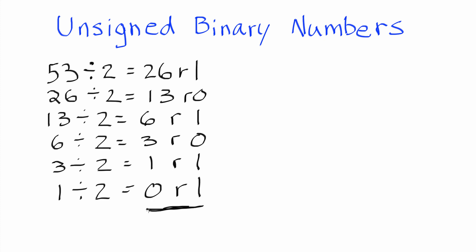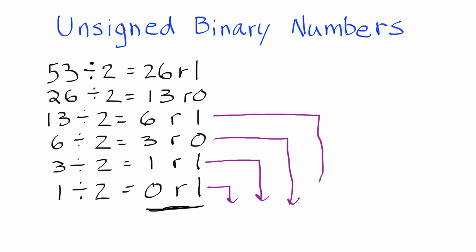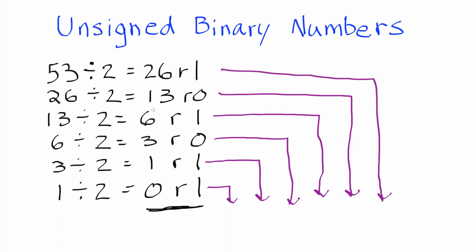So we've met that condition that tells us we need to stop. Now let's go ahead and draw the lines like I showed you in the previous example. Reading the remainders from bottom to top, we have 1, then another 1, then 0, then 1, then 0, and then 1. So 110101 is the unsigned binary representation of the number 53.